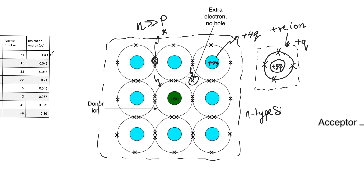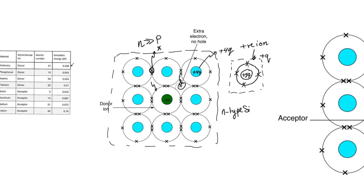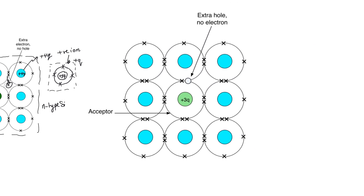Notice that this ion is charged, and so it experiences forces when an electric field is applied to it. However, it is massive because it consists of only neutrons, protons, and bound electrons, and thus it is immobile. Now if we add a dopant — an impurity from group 13 — we call it an acceptor. The acceptor has a plus 3Q in the inner circle and only three electrons in the outer shell. These three electrons will form three covalent bonds with the surrounding silicon atoms, and there will be an empty location in the final covalent bond. This empty location is a hole, and this hole has been created without a corresponding free electron.